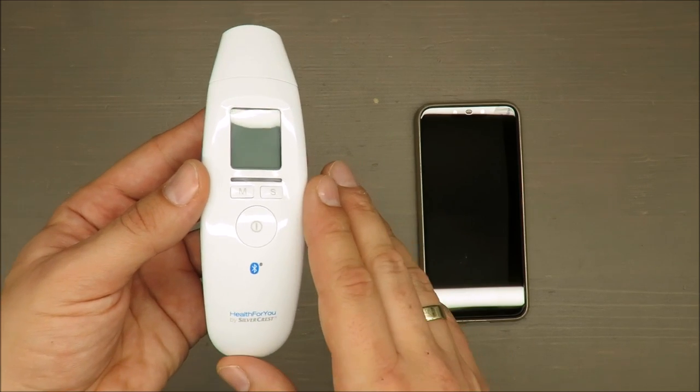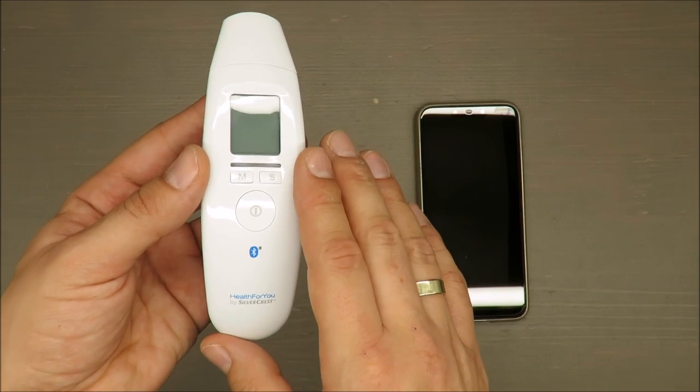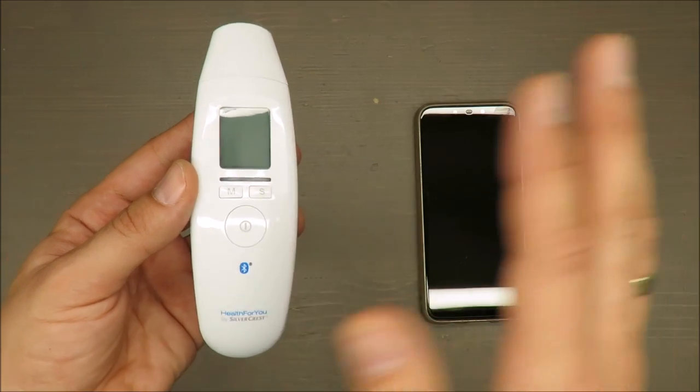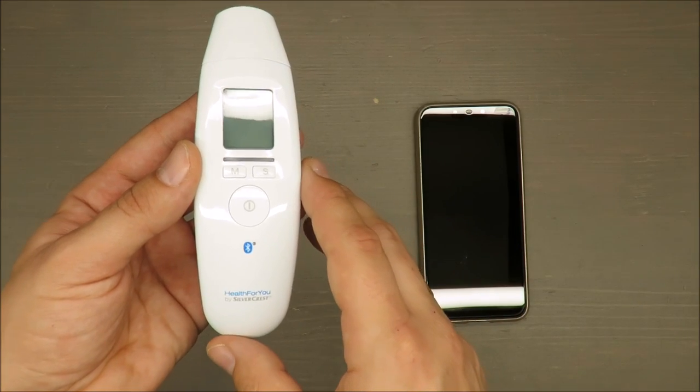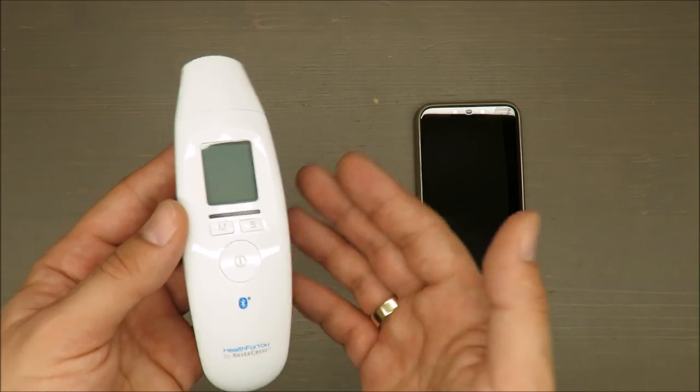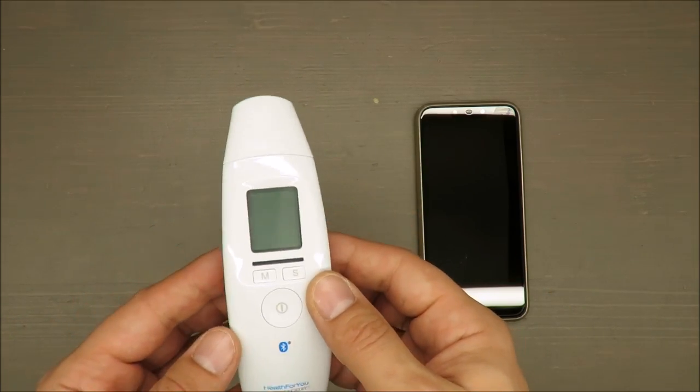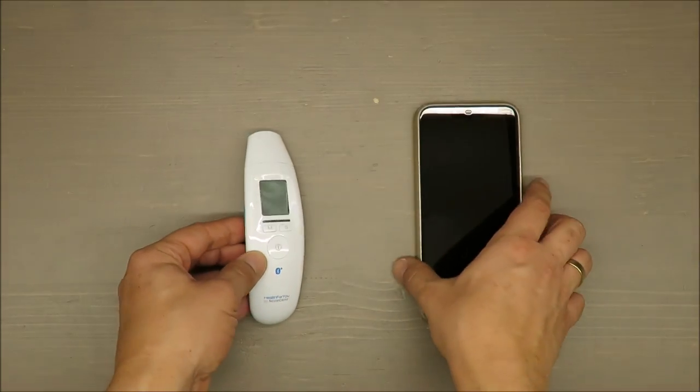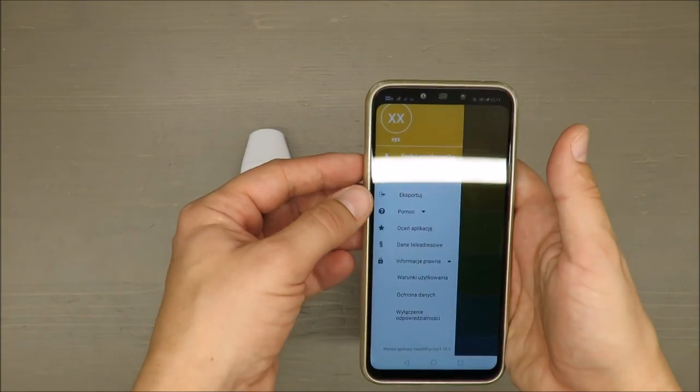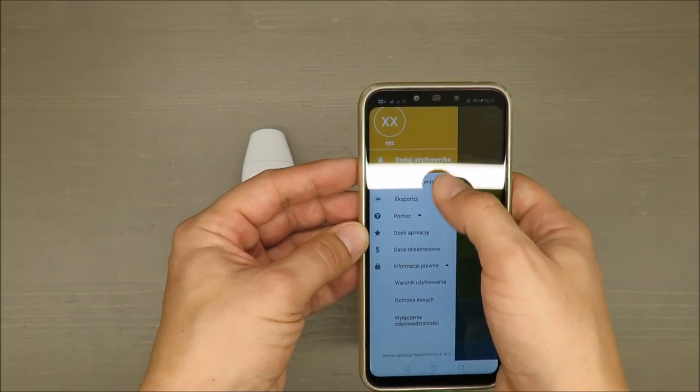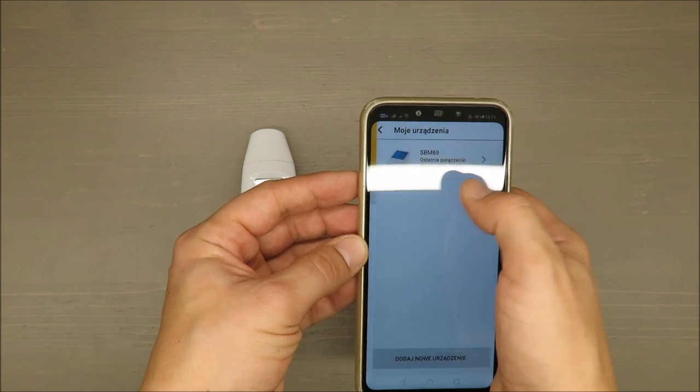It has Bluetooth connectivity, stores up to 30 records, date and time display, and it can switch between Celsius and Fahrenheit. So without further ado, let's try how fast it will be.